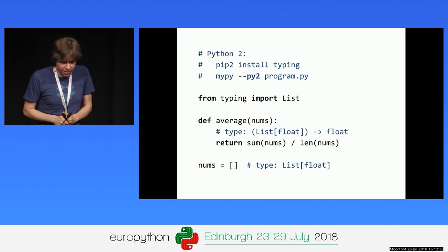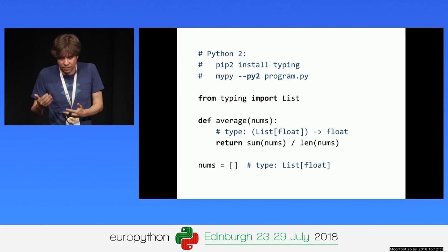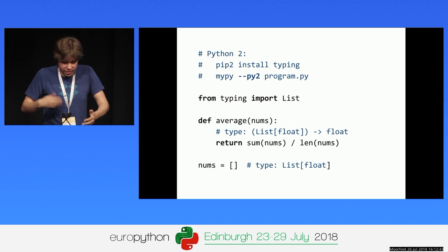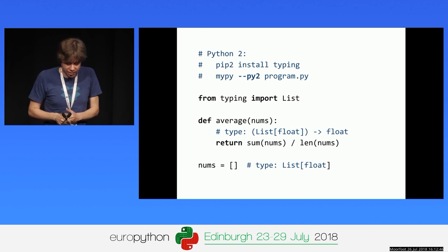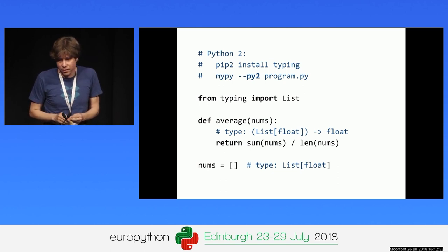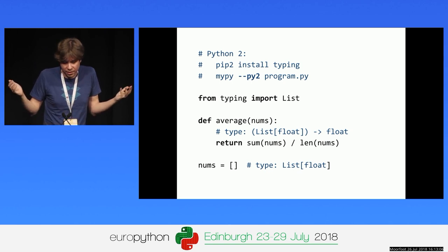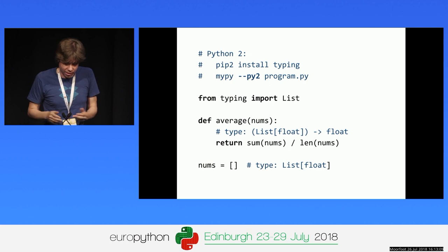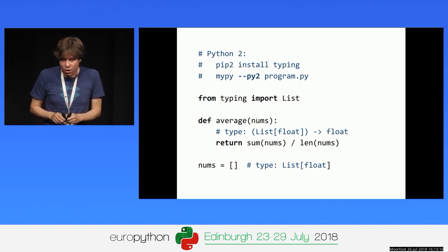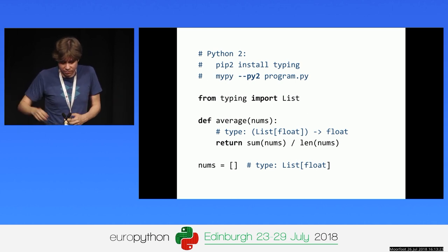You can also type check Python 2 using a slightly different syntax standardized in PEP 484 — type comments for functions and variables. The variable type comment is also useful in Python 3.5, which doesn't support variable annotation syntax. There's a backport of typing for Python 2, and you use the --py2 option to run mypy in Python 2 mode. You can have Python 2 and 3 compatible code and just run mypy twice with different options.